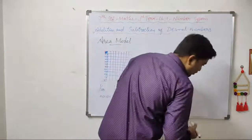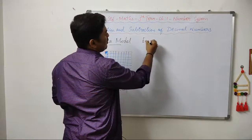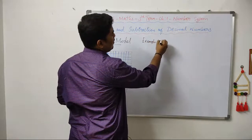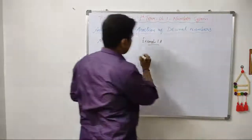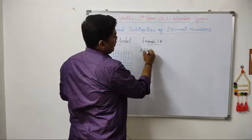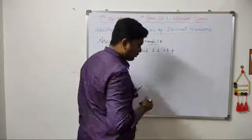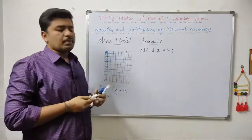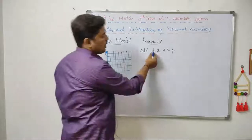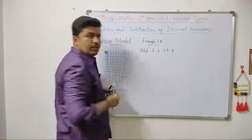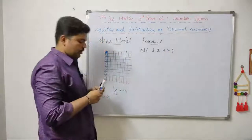Example 1.8. The question is 3.2 plus 6.4. Add 3.2 plus 6.4. It is addition. For 3.2, the whole number is 3 and the decimal part is 2. For 6.4, the whole number is 6 and the decimal part is 4.